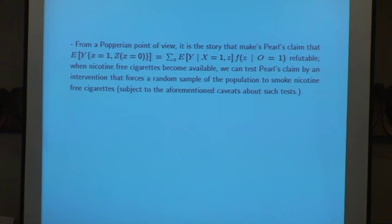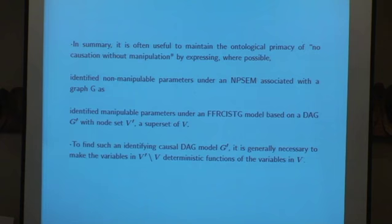And so I don't have enough time to go into everything. So in summary, it's often used to maintain the ontological primacy of causation without manipulation, expressing where possible identifiable non-manipulable parameters under NPSM associated with the graph G as identified manipulable parameters under an FFRCISDG based on a DAG G prime with a node set V prime, a super set of V. And to find such an identifying causal DAG, it's generally necessary to make the variables deterministic functions of variables in V. So there's no new mathematics here. This is all about philosophy. All the mathematics I did by going to this other thing, you can see it's contained the same mathematics. It's just you can reinterpret many of these things as manipulable parameters in a bigger graph, and therefore they become apparently testable because you had to tell the story, by which I could then later test them, take the nicotine out of cigarettes.